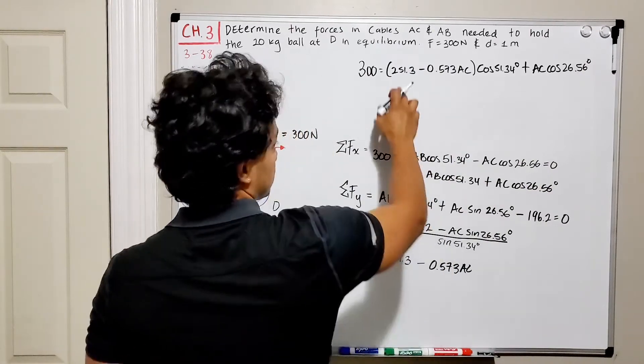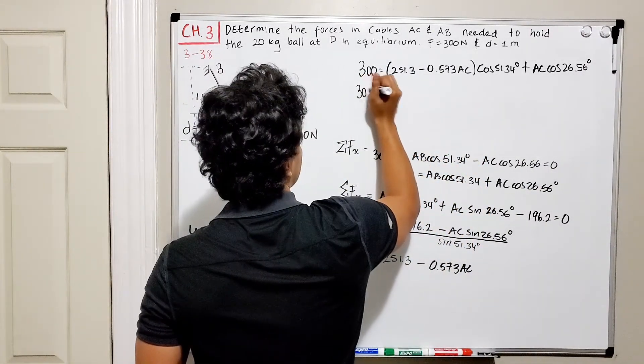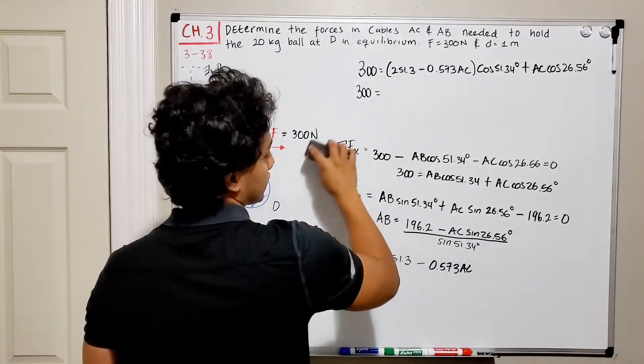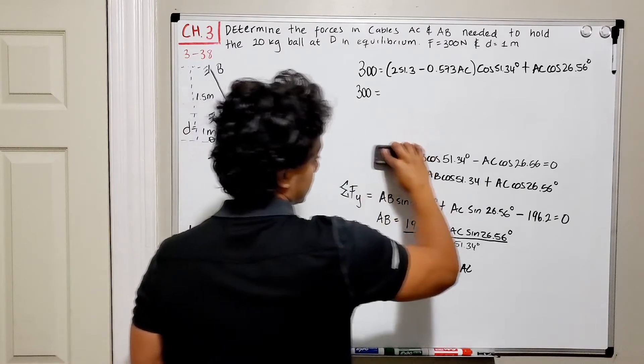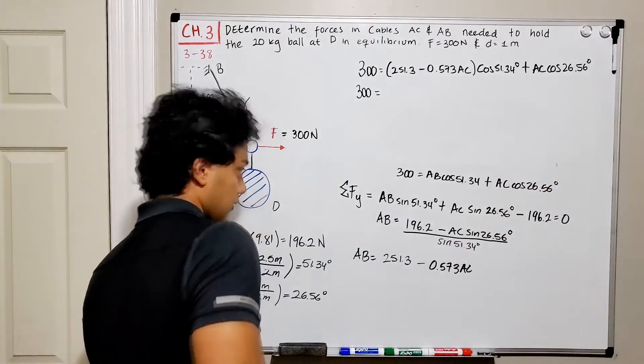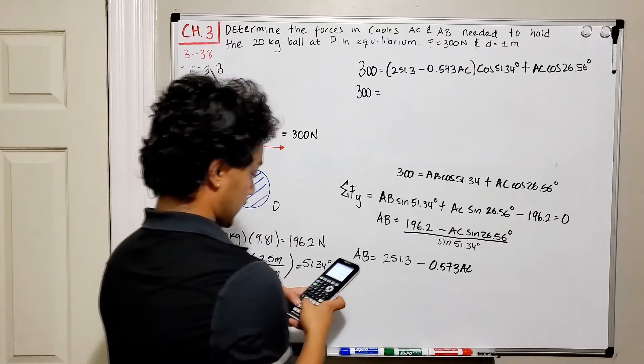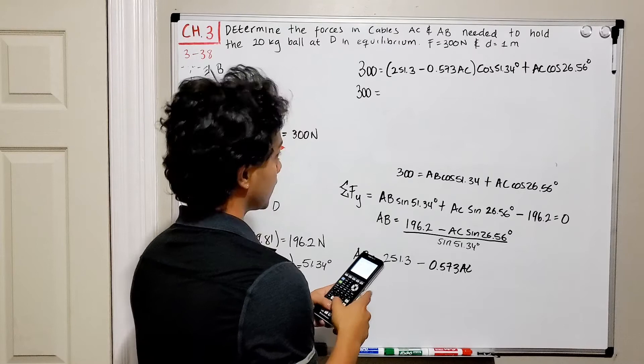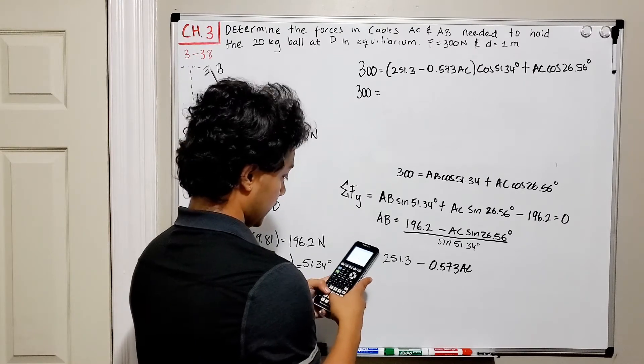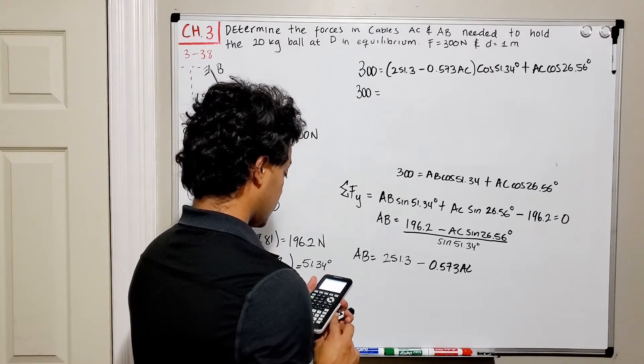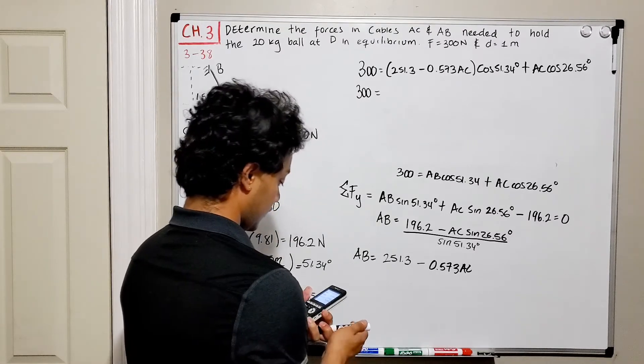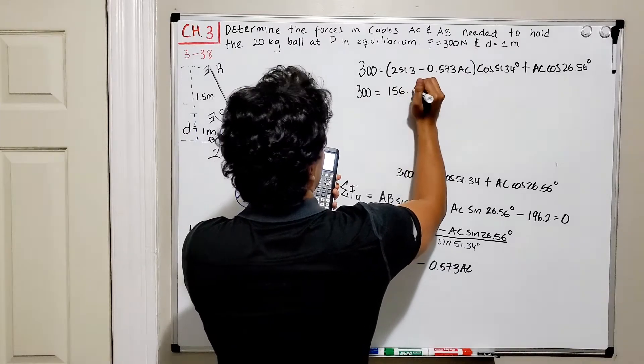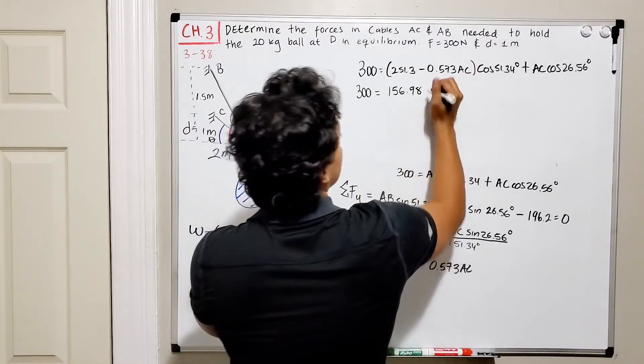So let's multiply this guy. We got 300 is equal to, I want to erase this guy too. And let's see what that is.